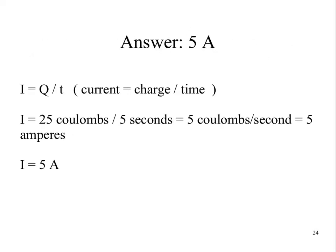Well, if we use our formula, intensity of current equals the quantity of charge divided by time, or current equals charge divided by time, we can plug those numbers into our formula. We get 25 coulombs divided by 5 seconds equals 5 coulombs per second. And that would be equal to 5 amperes. An ampere is 1 coulomb per second.